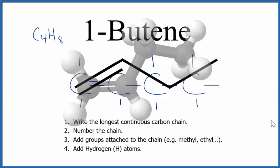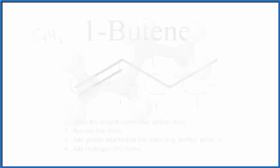Note that when we have double bonds, we need to think about cis and trans isomerism. However, because the double bond is on the first carbon, we don't have geometric isomerism with 1-butene. This is Dr. B with the structural formula for 1-butene. Thanks for watching.